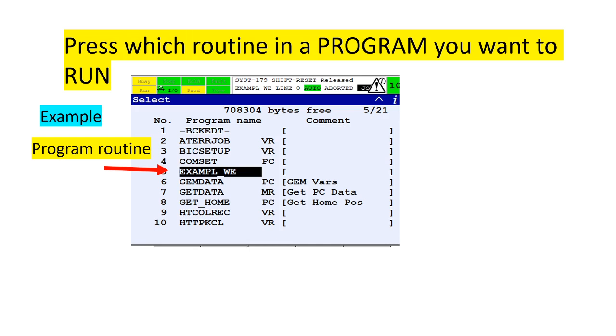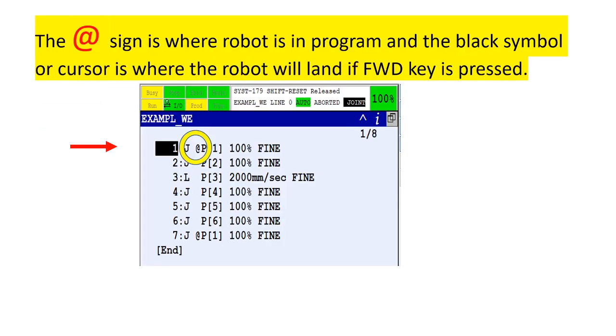Press which routine in a program you want to run. The @ sign is where the robot is in the program and the black symbol or cursor is where the robot will land if forward key is pressed.